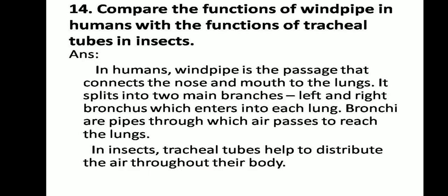Compare the functions of the windpipe in humans with the functions of tracheal tubes in insects. In humans, the windpipe is the passage that connects the nose and mouth to the lungs. It splits into two main branches, the left and right bronchus, which enter each lung. Bronchi are pipes through which air passes to reach the lungs. In insects, tracheal tubes help to distribute air throughout their body.